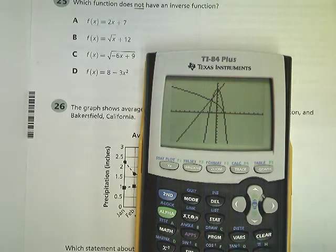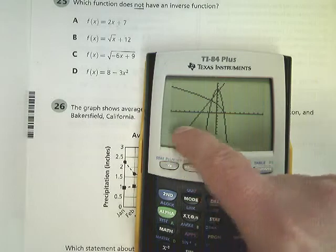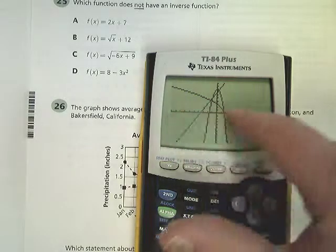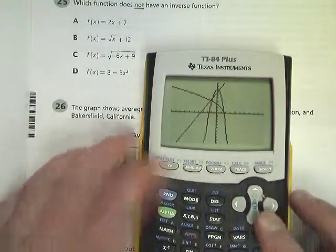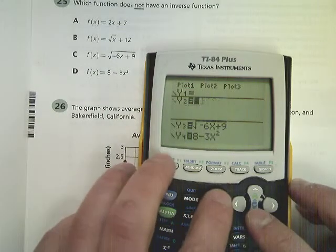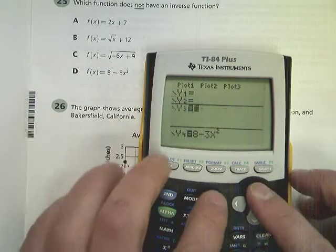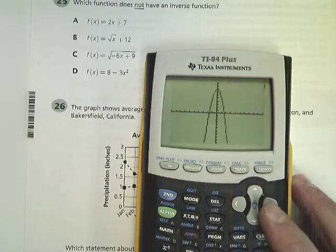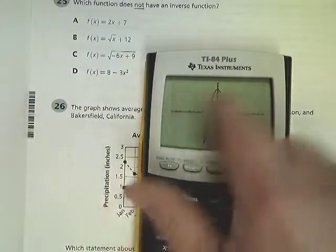But you can see that the last one that comes up here, and you can do these individually too by the way, fails the horizontal line test a ton of times. Let's make sure that that's the one that does it. So I'm going to graph the fourth one, or D, and you see how it fails the horizontal line test?